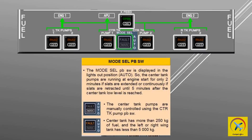When the mode selector push button switch is pushed in, the MANUAL legend appears, indicating the center tank pumps are manually controlled using the center tank pump push button switch. If the fault light appears, it means the center tank has more than 250 kilograms of fuel and the left or right wing tank has less than 5000 kilograms.